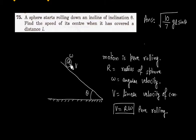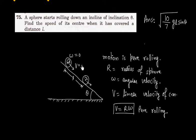We have to find the speed of this sphere when it covers a distance l along the incline. So let us say this distance is l. Initially, omega is 0 and v is also 0, because it says it starts rolling — so at t equals 0, the sphere just starts the motion.